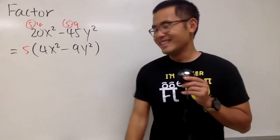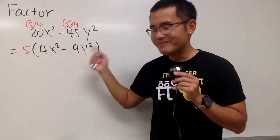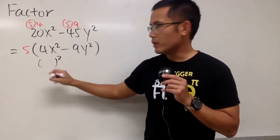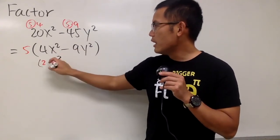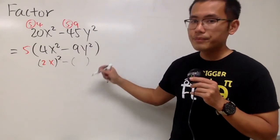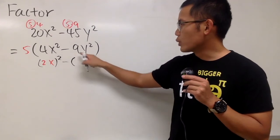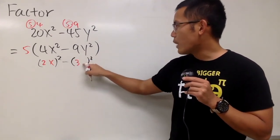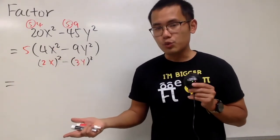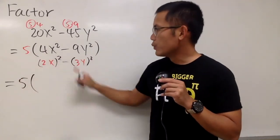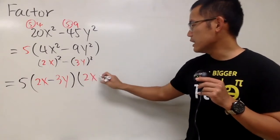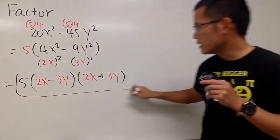Can we do more? Yes — this is a difference of two squares. For 4x squared, ask what to the second power gives you 4 — the answer is 2, and 2 squared is 4 — so we write (2x) squared. For 9y squared, ask what to the second power gives 9 — that's 3 — so we write (3y) squared. Using the difference of two squares formula (and don't forget the 5 in front): we get 5 times 2x minus 3y times 2x plus 3y.